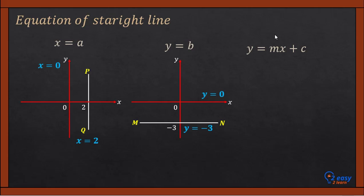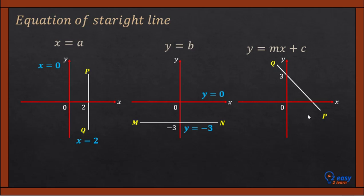The third type of straight line has the standard equation y equals mx plus c, where m is the gradient and c is the y-intercept. Line PQ is a tilted line with a slope — in mathematics, slope is called gradient. The gradient of a straight line is rise over run. There is also the formula m equals (y2 minus y1) over (x2 minus x1), but here we use rise over run: rise is 3 and run is 2.